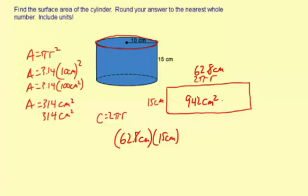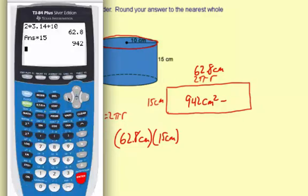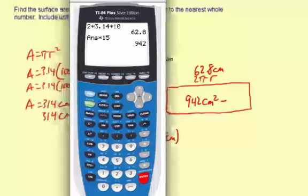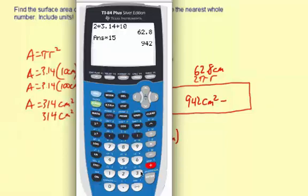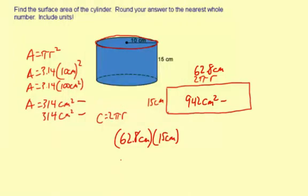So now we need to add the lateral area to the area of the top and bottom circles. And that'll give us the total surface area. So 942 plus 314 plus 314, 1570. So our total surface area is 1,570 square centimeters.